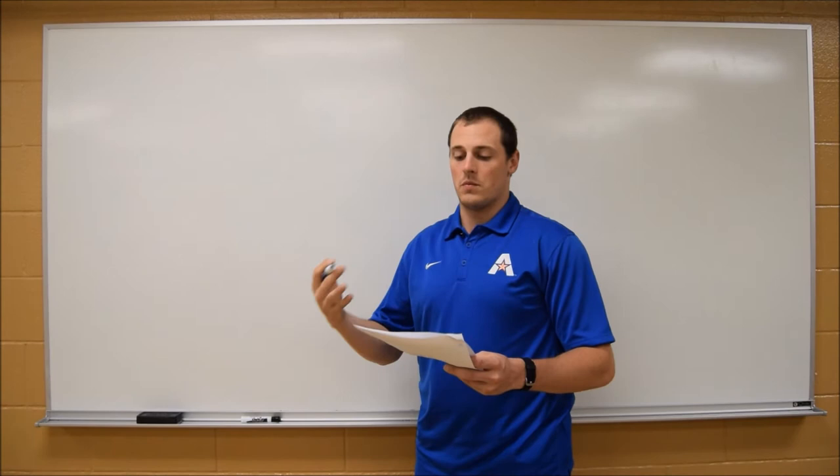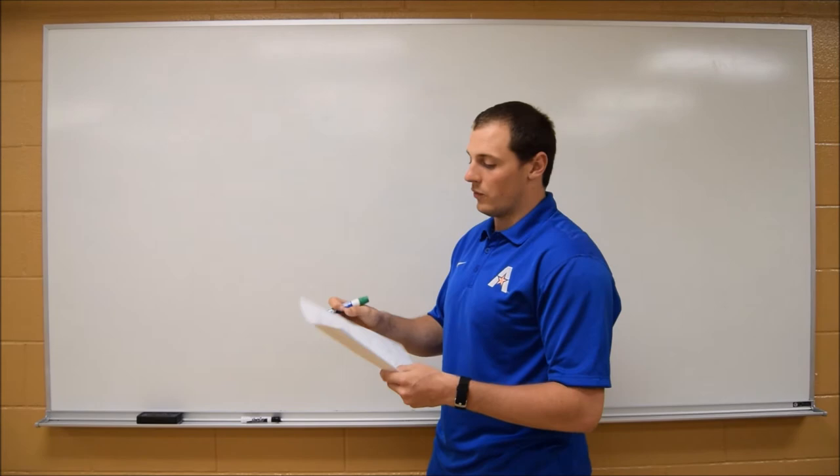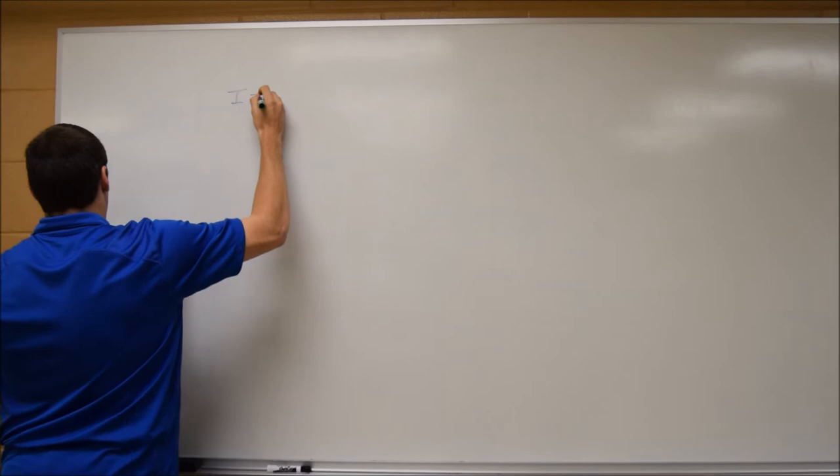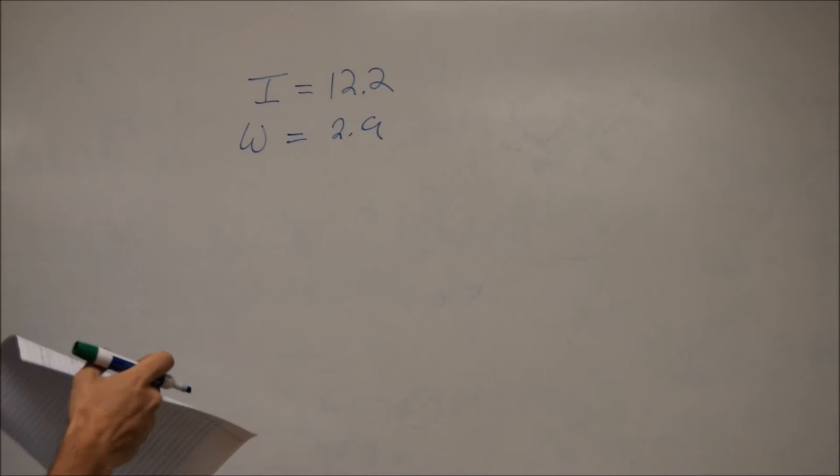Alright, so for number three, we're going to go over the moment of inertia and angular velocity. So the problem is asking us to find the angular momentum at takeoff, angular momentum and angular velocity while in the air, so at a later point in time. So the first thing you want to do, same thing that we did before, is just write out all the variables. So we have our moment of inertia is equal to 12.2, our angular velocity is equal to 2.9, and that is all that we're given to start.